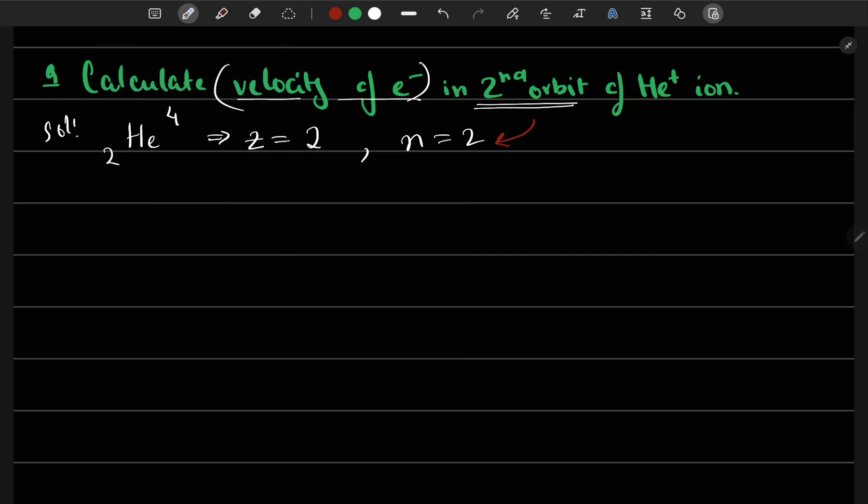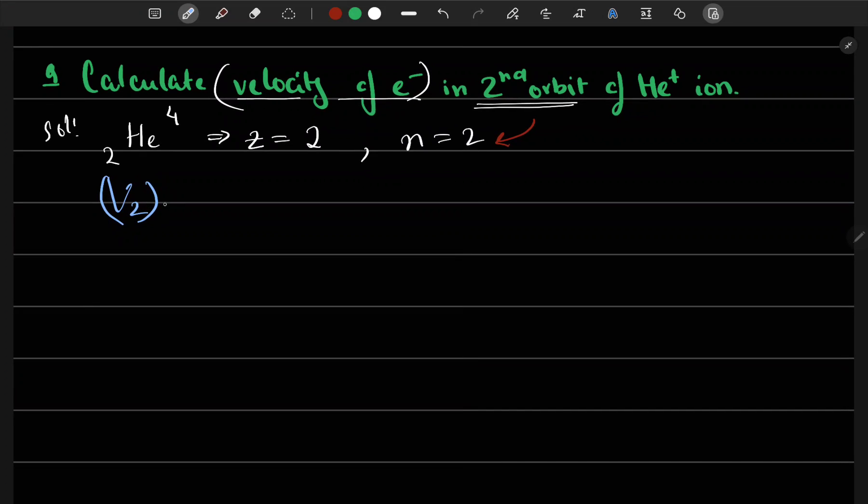Let us get started. First step, V, velocity of electron in second orbit of helium plus ion.